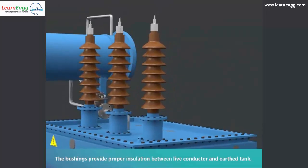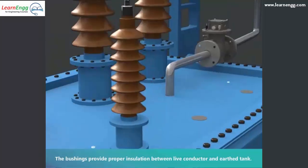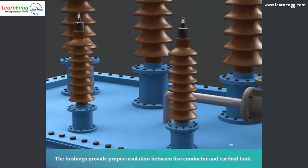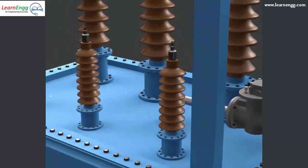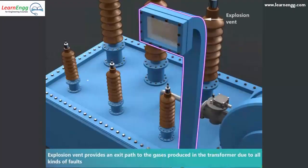The bushings provide proper insulation between live conductor and earthed tank. Explosion vent provides an exit path to the gases produced in the transformer due to all kinds of faults.